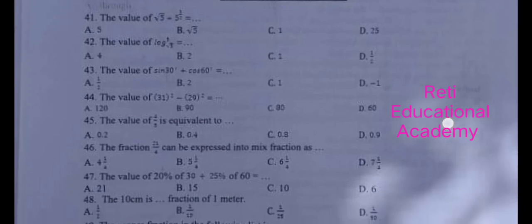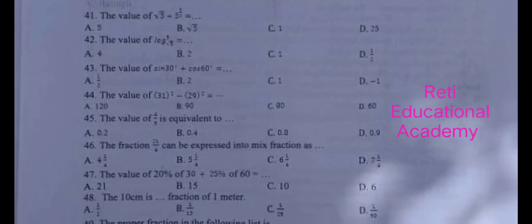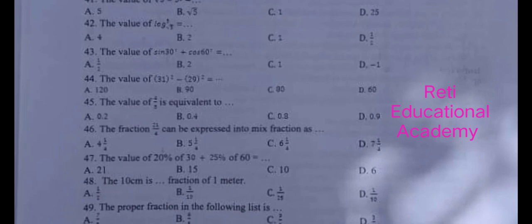Question number 43: The value of sin theta 30 plus cos 60 is equal to A) 1 upon 2, B) 2, C) 1, D) minus 1. The correct answer is C, 1.